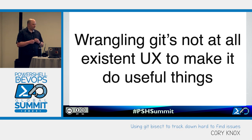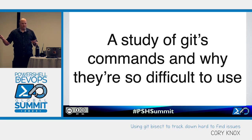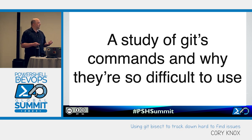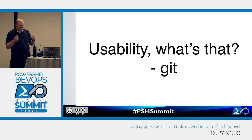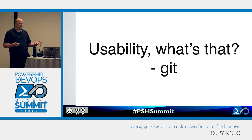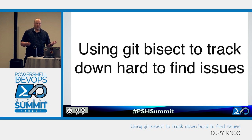So I thought, let's go a little bit further, narrow it down. I came up with a study of Git's commands and why they're so difficult to use. But again, there are 140 or so commands — could do a whole summit on that. Not specific enough for a 45-minute session. So I thought, well, what if I were Git? Usability? What's that? Because Git's not very usable. But then I got to thinking — I have actually used Git bisect before to find an error — and that's where I came up with the talk today about using Git bisect to track down hard-to-find issues.